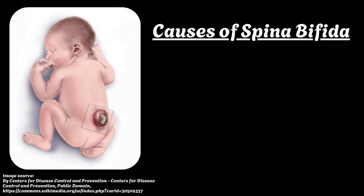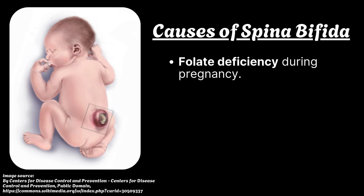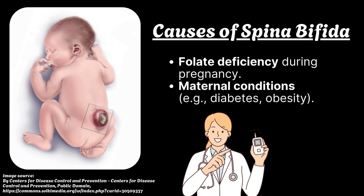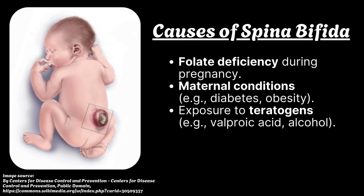What are the causes of spina bifida? It occurs due to folate deficiency during pregnancy. Maternal conditions — for example, diabetes and obesity — as well as exposure to teratogens such as valproic acid and alcohol are also known causes.